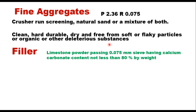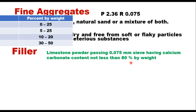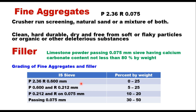The filler passing 75 micron — generally limestone powder is recommended — should have calcium carbonate content not less than 80% by weight. The grading of fine aggregate and filler together should satisfy the condition that passing 2.36 mm and retained on 600 micron should be 0 to 25%, passing 600 micron and retained on 212 micron it is 5 to 25%, and similarly other sizes.